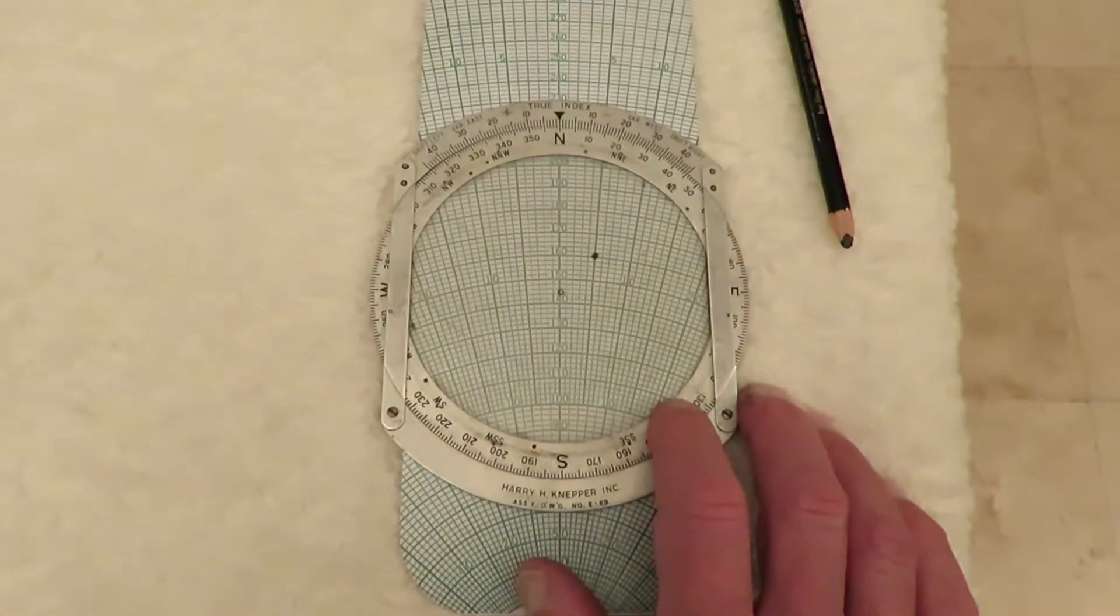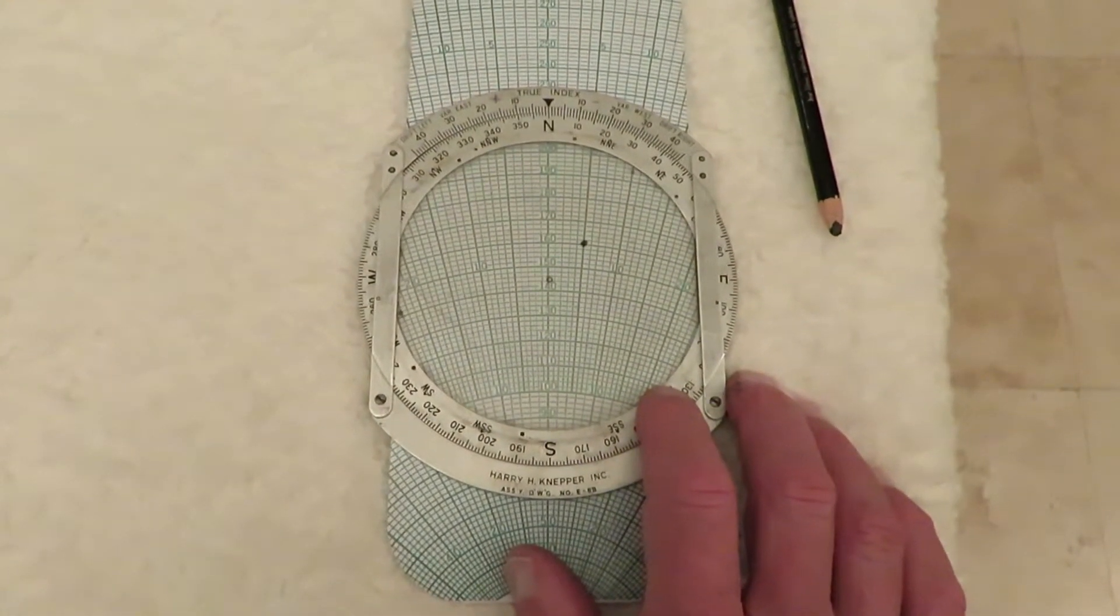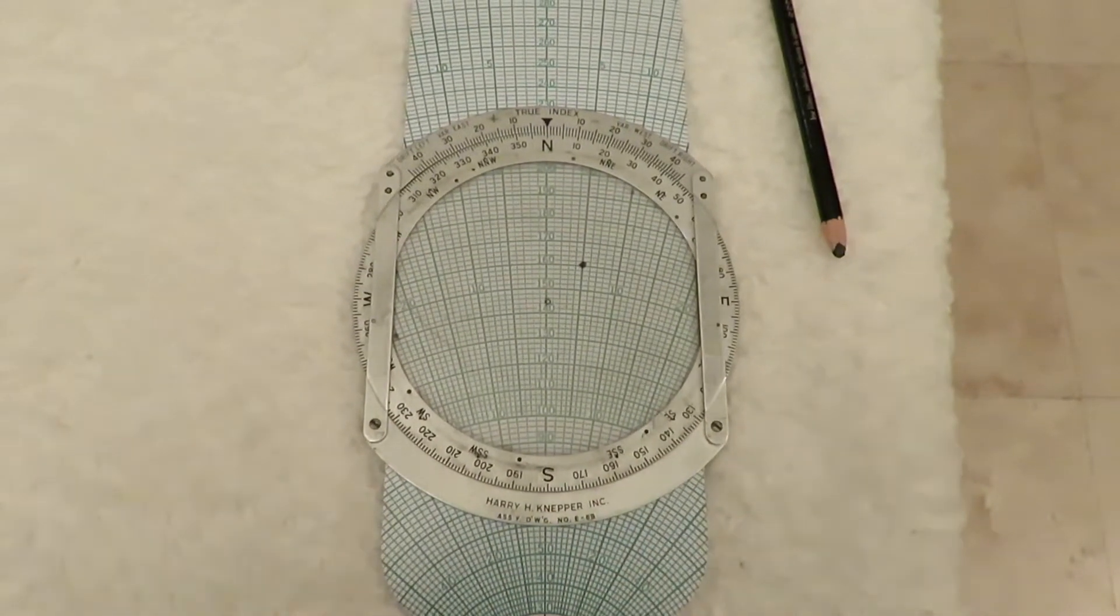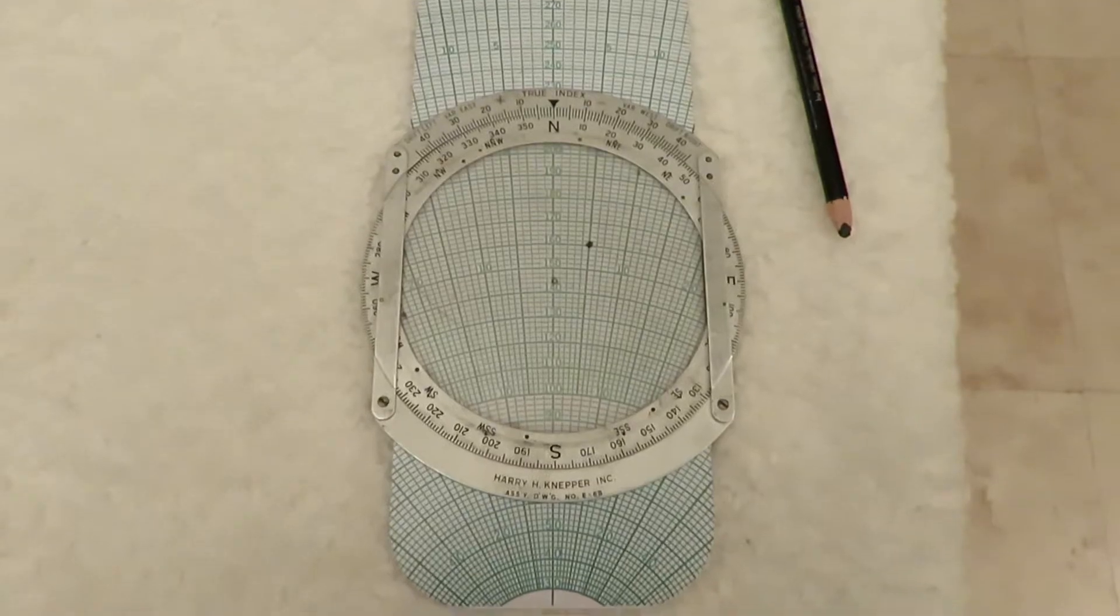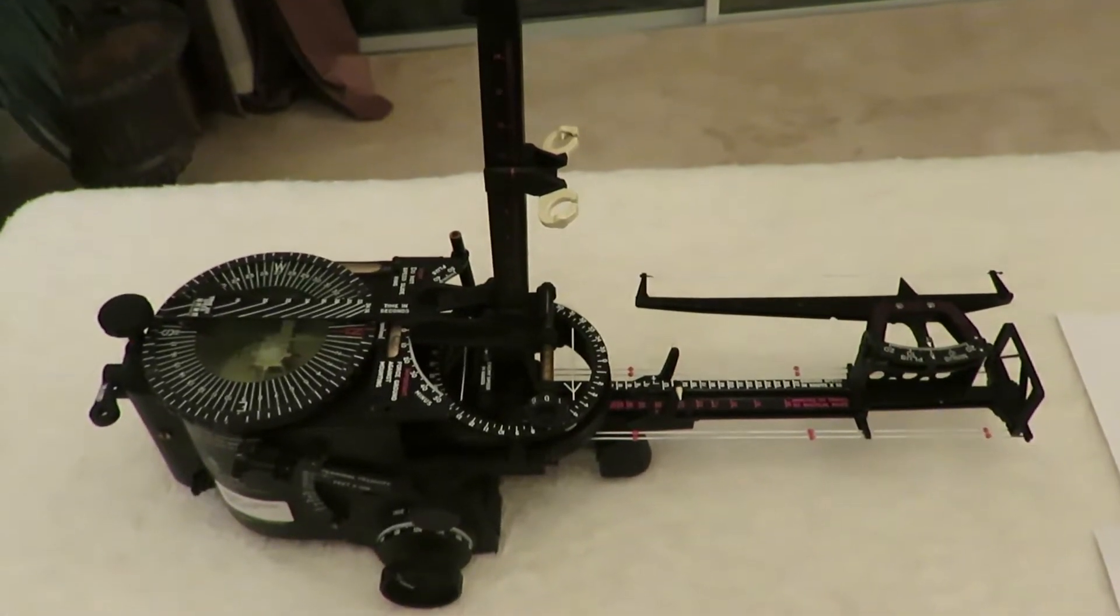This introduces us to the Mark 9 course setting bombsite. The bombsite incorporated this computing function into a large number of gears that would allow the site to be set up and solve the vector problem. This is a Mark 9 bombsite developed prior to and used during World War II.